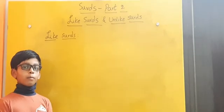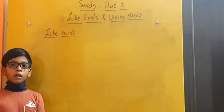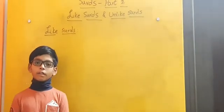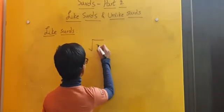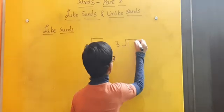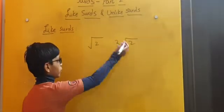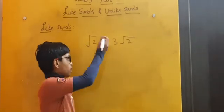Now let us learn about what is a like surd. Like surds are surds whose root part is same although the numbers in front of them are not same. Let us take √2 and 3√2. Here the root part is same and the numbers in front of them are not same. So these are called like surds.